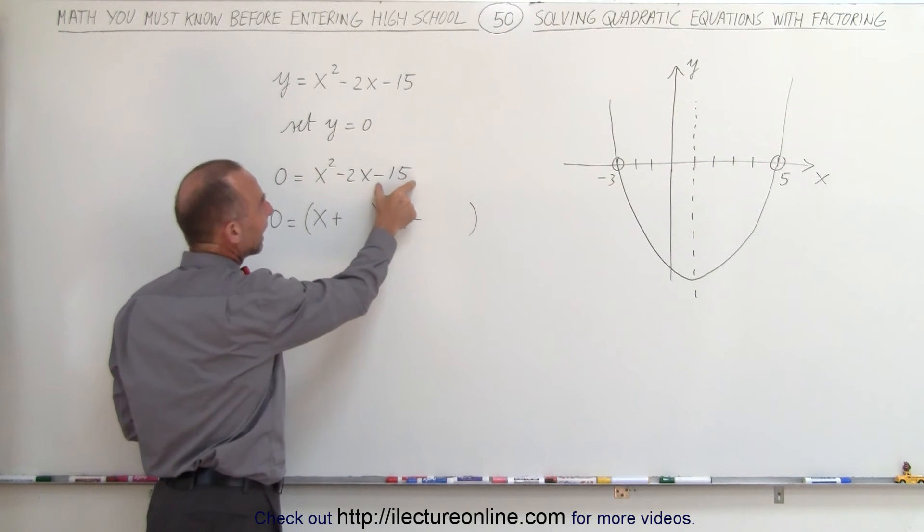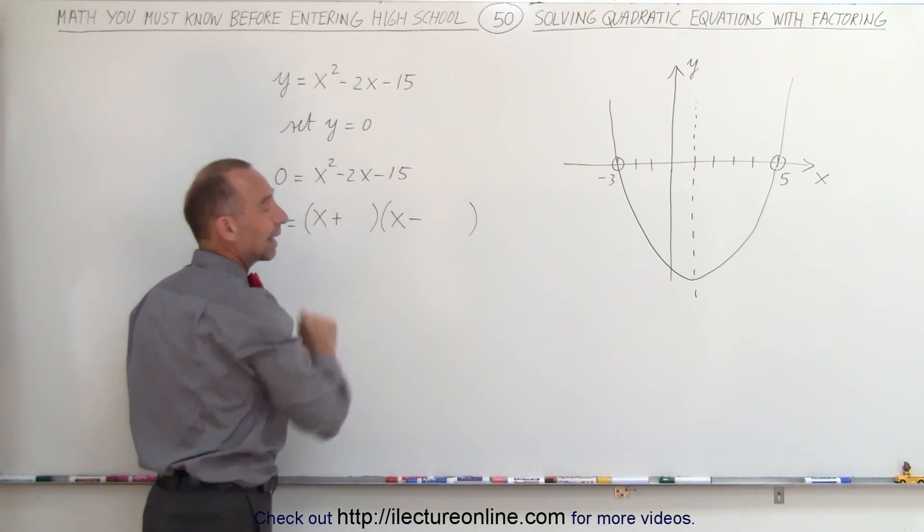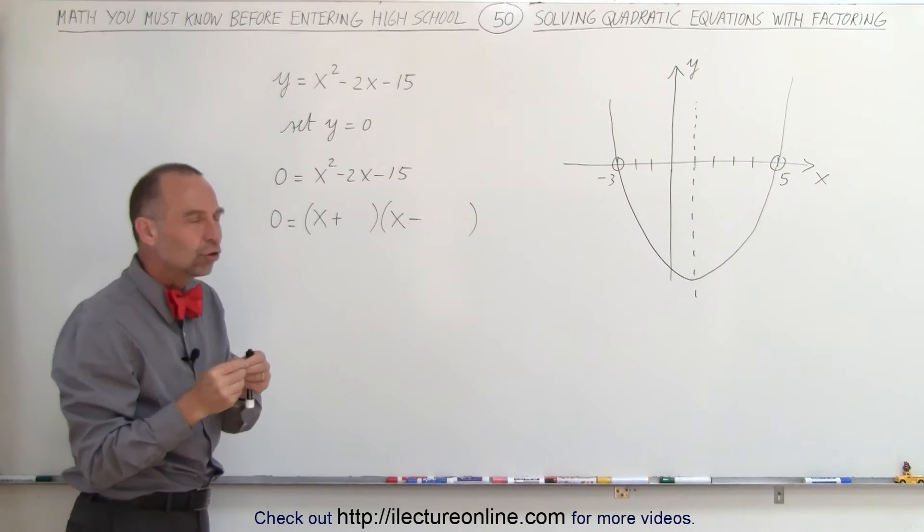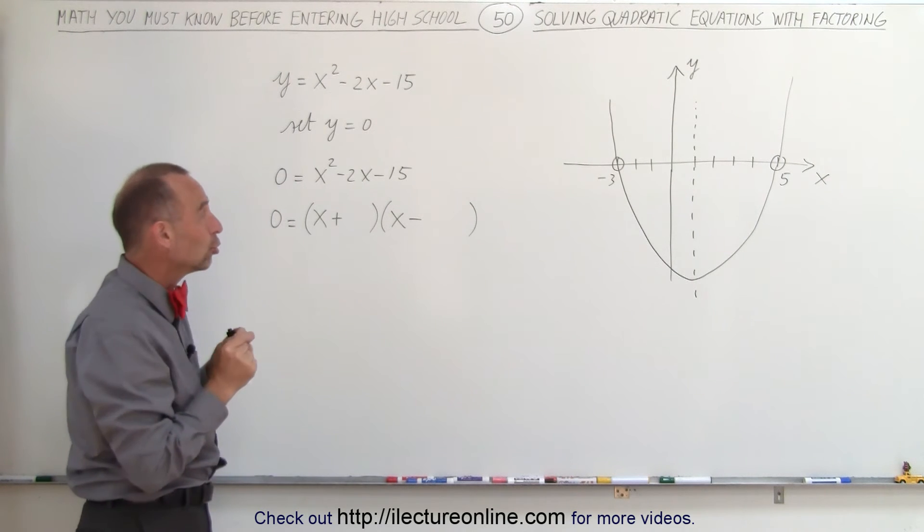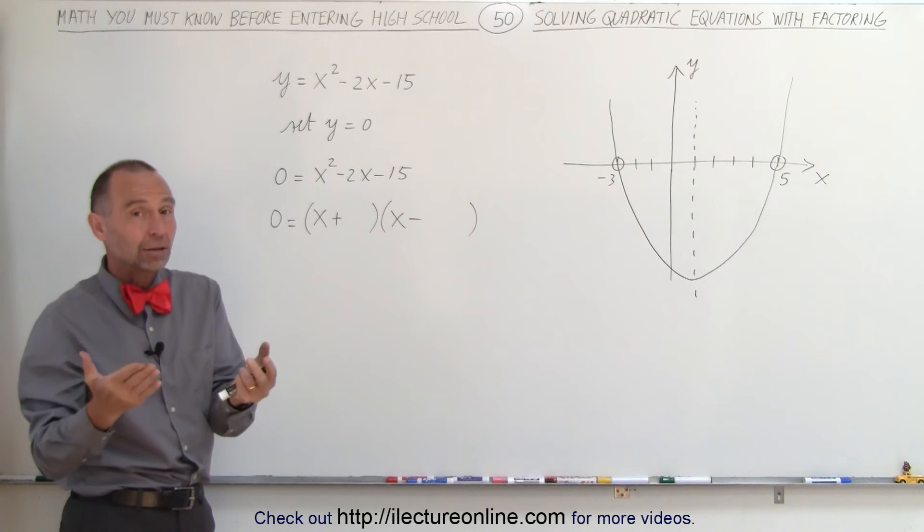Now we're looking for two numbers such that when we multiply we get negative 15, and when we add the two together we get negative 2, which means the larger number is negative and the smaller number is positive and they differ by 2. So 5 and 3 differ by 2.